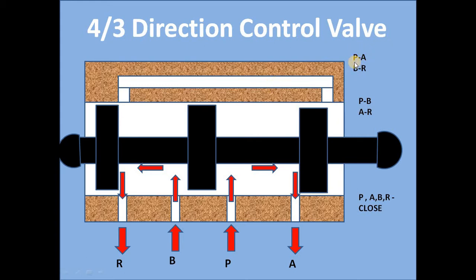In one position, oil goes from P to A and B to R. In the next position, oil goes from P to B and A to R. In the last position, all ports are closed.